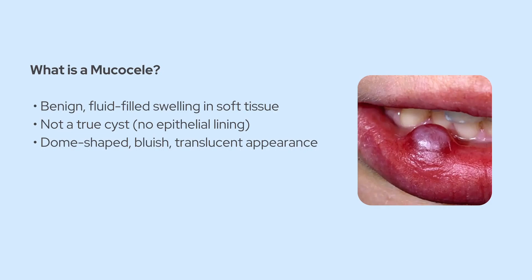So what exactly is a mucocele? It's actually a benign lesion — a fluid-filled swelling that results from the accumulation of mucus. Even though it's sometimes called a mucus retention cyst, it's important to understand that it's not a true cyst in the strictest sense because it doesn't have an epithelial lining. Instead, it's more of a pseudocyst that forms in the soft tissue, usually presenting as a dome-shaped, bluish translucent swelling.